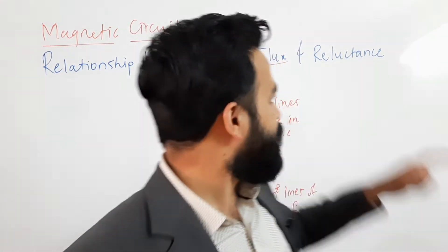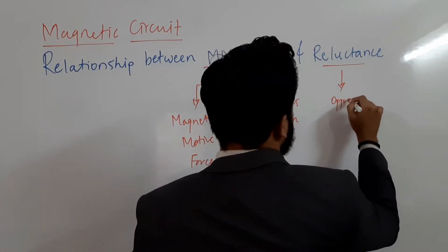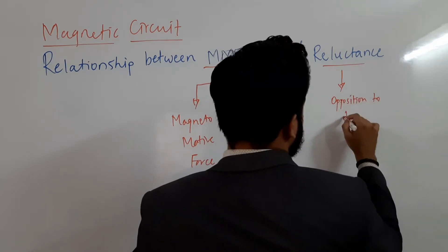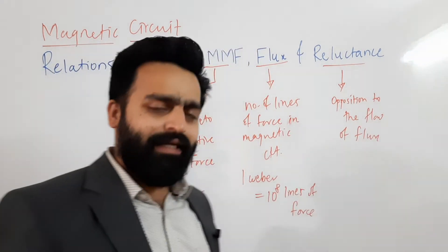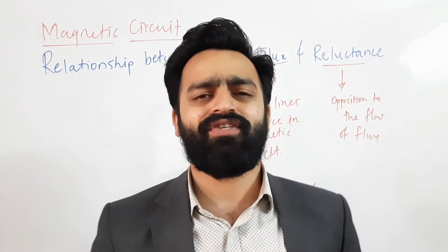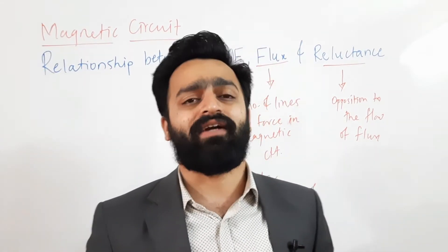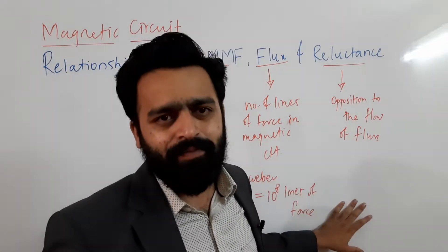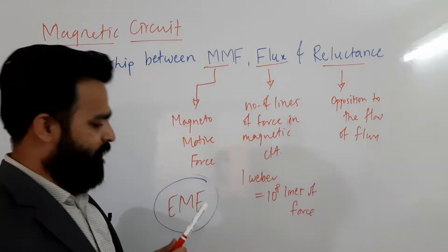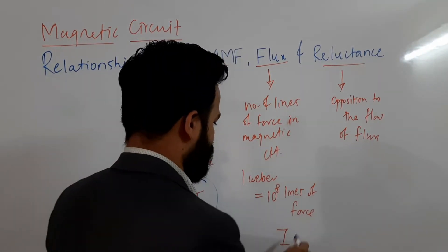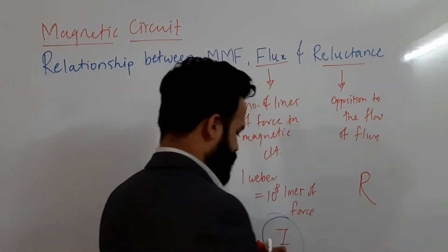The third parameter is reluctance. Reluctance is the opposition to the flow of flux. Just like in a simple electric circuit, resistance is the opposition to the flow of current — in the same way, in a magnetic circuit, reluctance is the opposition to the flow of flux. So MMF is analogous to EMF, flux is analogous to current, and reluctance is analogous to resistance in the electric circuit.